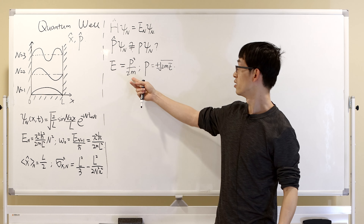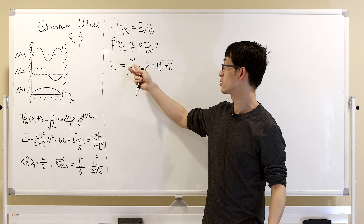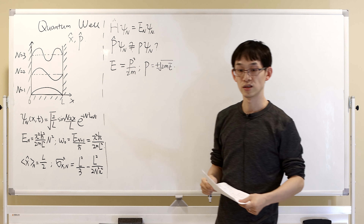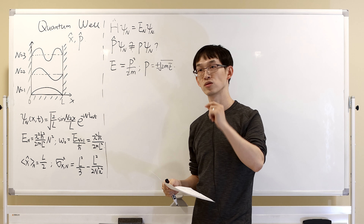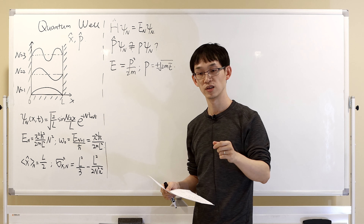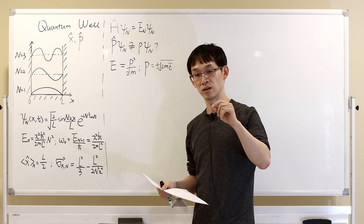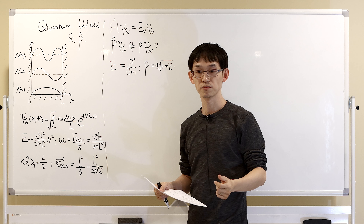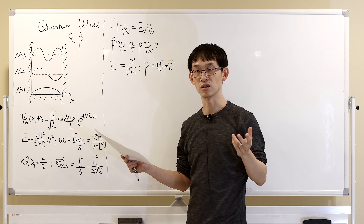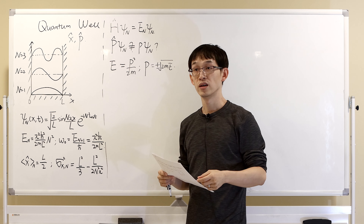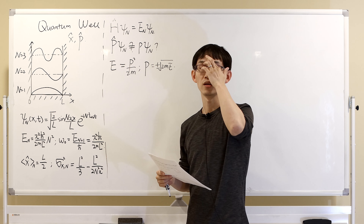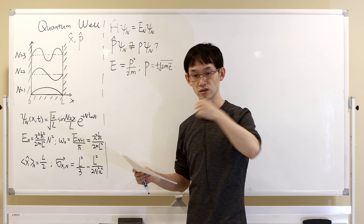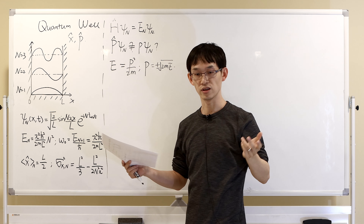When you say something is the eigenstate of an operator, that means when you measure it, you get a single value — every time you measure, you get the same value. But here, for a given energy, momentum has two values. This is true for most systems: your energy eigenstate is not your momentum eigenstate.